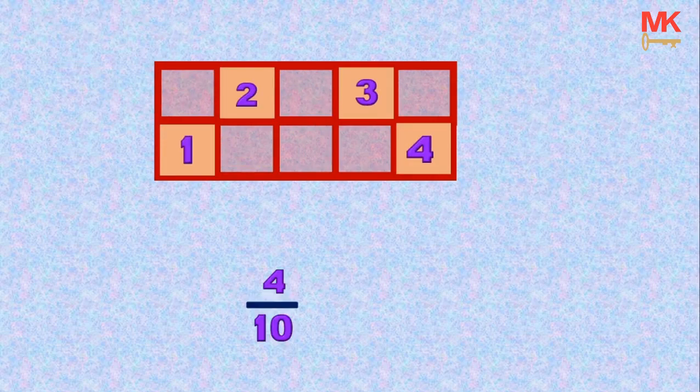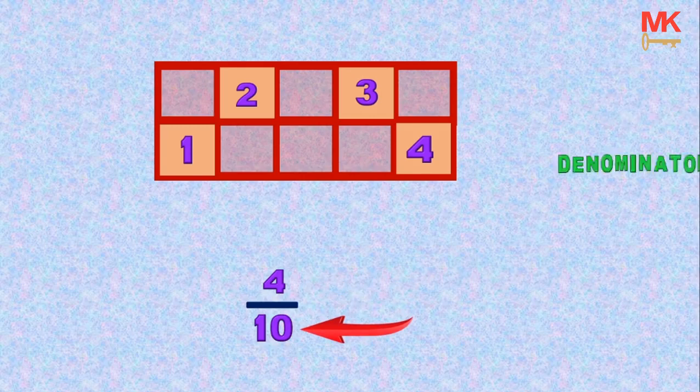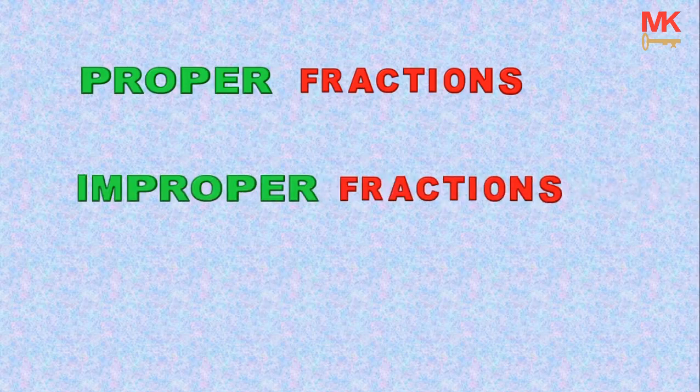Note that in a fraction, the number on top is called the numerator, while the number under is called the denominator. So there are 3 main types of fractions: the proper fractions, the improper fractions, and the mixed fractions.